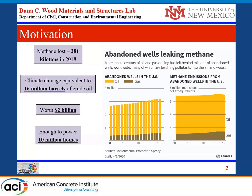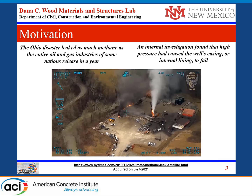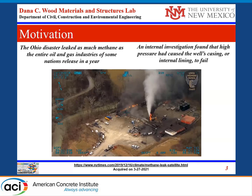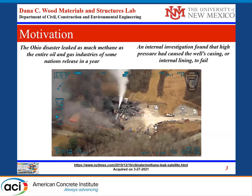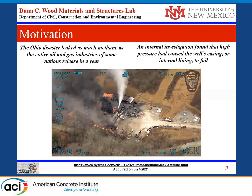When we look into a global problem, which is methane leakage — methane being the main component of natural gas — leakage of methane has been a global problem. In this slide, we're looking at abandoned wells and some of the statistics. In 2018 alone, 281 kilotons of methane was lost in leakages, creating very adverse climate damage and environmental impacts. Looking into some of the active wells, a recent incident is the 2018 Ohio disaster, where the methane leaked was as much as the entire oil and gas industries of some nations release in a year.